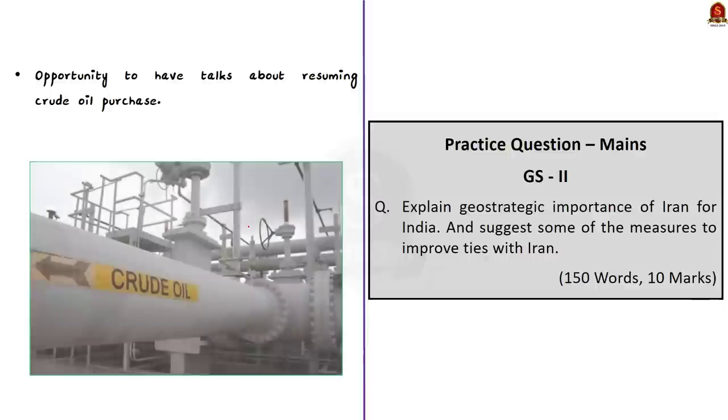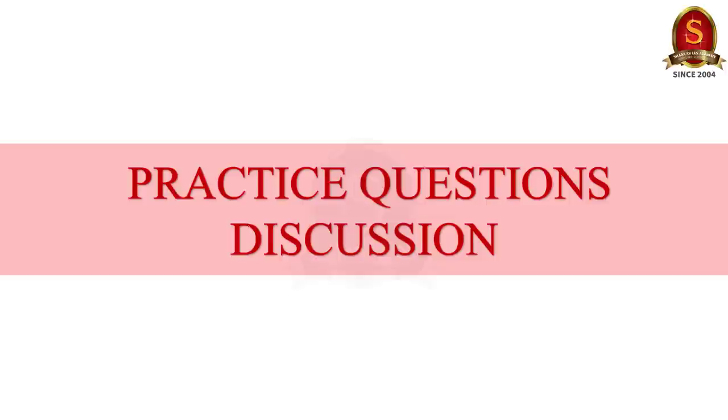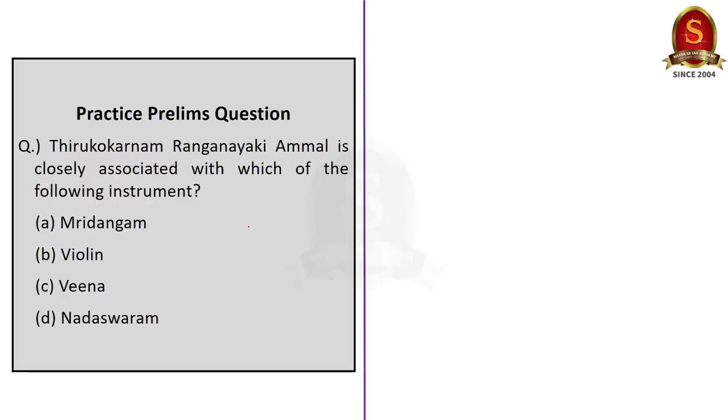We have three practice prelims questions today. Let us see them one by one. Let us take up the first question. Tirukokarnam Ranganayaki Ammal is closely associated with which of the following instruments? Mridangam, Violin, Veena, Nadaswaram. We have seen in the discussion that Tirukokarnam Ranganayaki Ammal was the only woman among the 23 Mridangam artists who performed at the All India Music Conference held in 1927 in Madras. Also, Ranganayaki Ammal is considered as the first woman to have made it big in the male-dominated field of Carnatic percussion. So, the correct answer here is option A Mridangam.